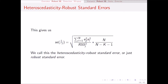We'll start here at the top. ej is the residuals when we regress explanatory variable j on all the other explanatory variables. e is just the regular residual from the original regression, and the RSSj is the RSS from regressing variable j on all the other explanatory variables. n is the sample size and n minus k minus one is the degrees of freedom.